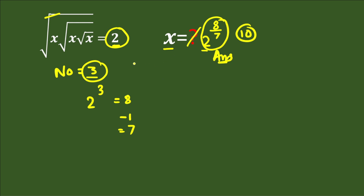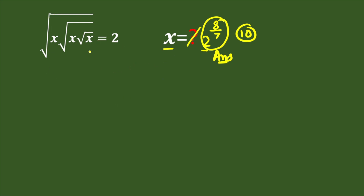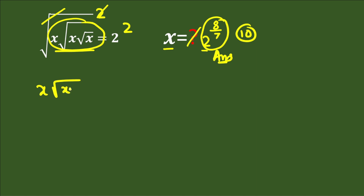Now we'll solve it elaborately. For this type of problem, we remove the square root by squaring both sides. On the left-hand side, the bigger square root is cancelled, and we are left with x times square root of x times square root of x. On the right-hand side, we have 2 squared.